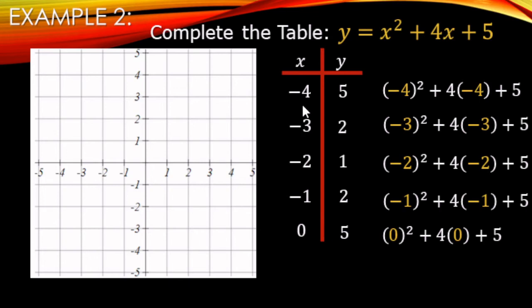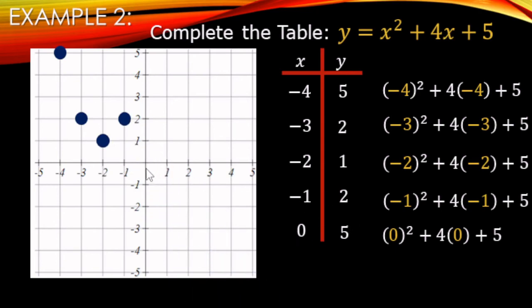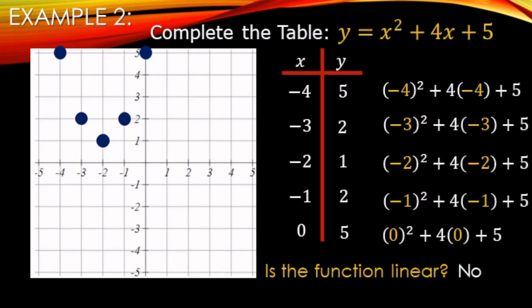Now we can plot the points: (-4, 5) up here, (-3, 2) there, (-2, 1) there, (-1, 2) there, and (0, 5) right on the y-axis. Is this function linear? No — it does not make a straight line. It makes a U-shaped curve, which is actually called a parabola, or a quadratic. This shape comes up often enough that it has a special name: parabola.